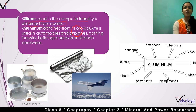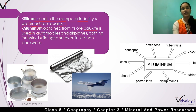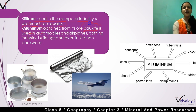Aluminum, obtained from its ore bauxite, is used in automobiles and airplanes, the bottling industry, buildings, and even kitchen cookware. Aluminum's basic ore is bauxite.